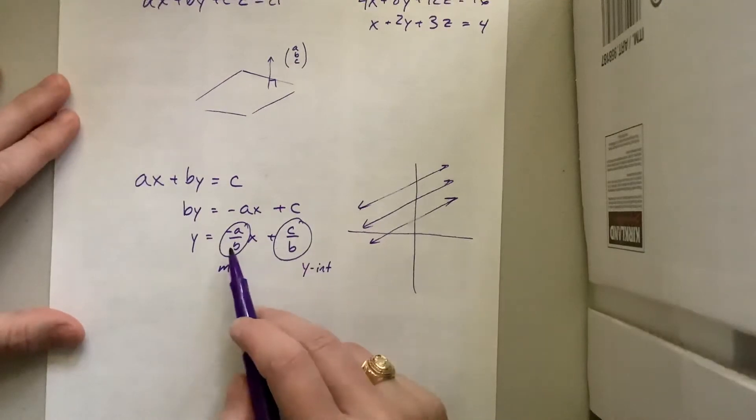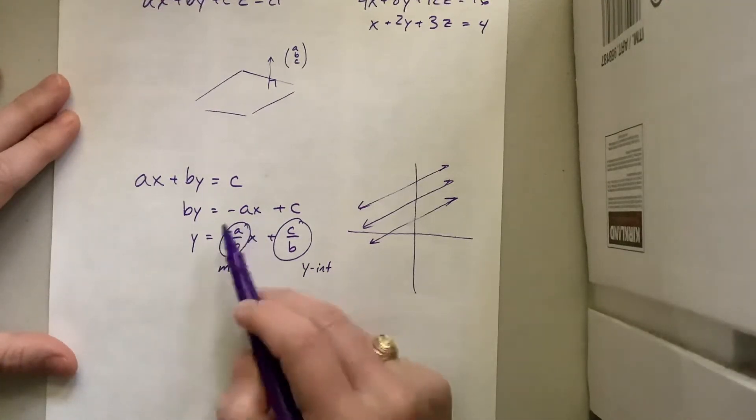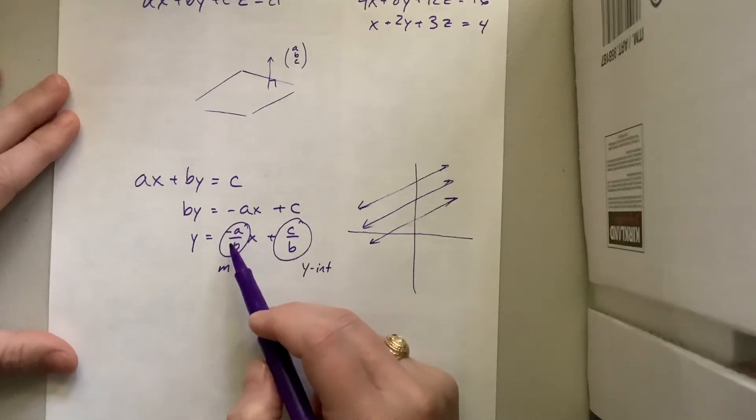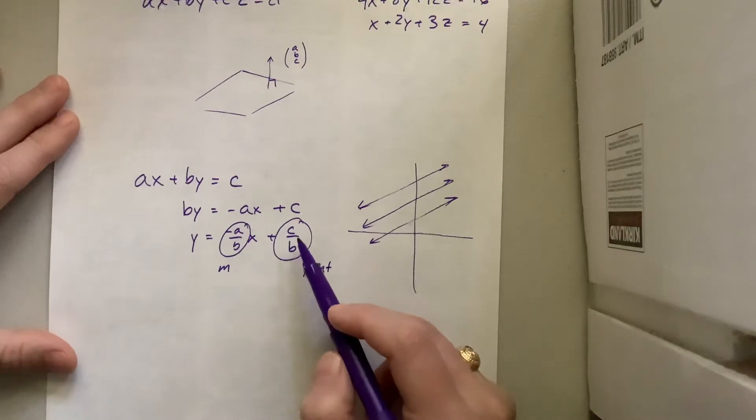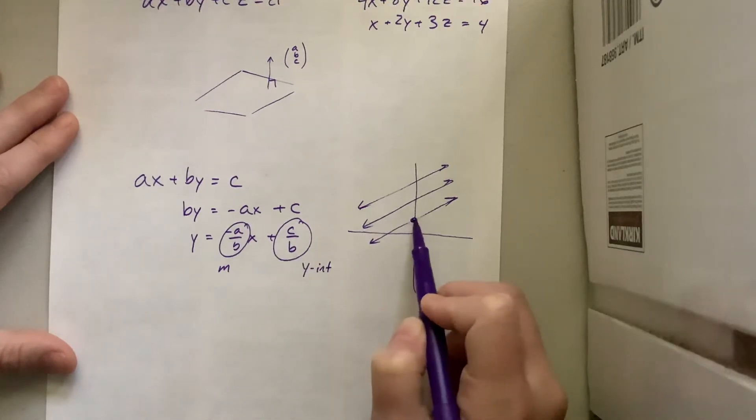So what this is, is I have all sorts of lines that have the same negative A over B will be parallel, but if they have the same C over B then they're going to be the exact same line and they're going to have the same intercept.